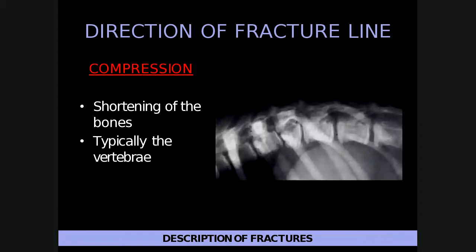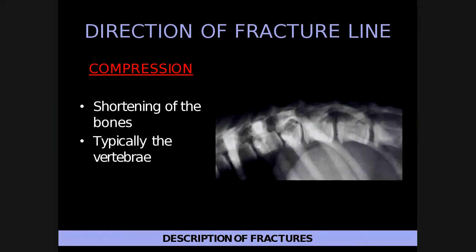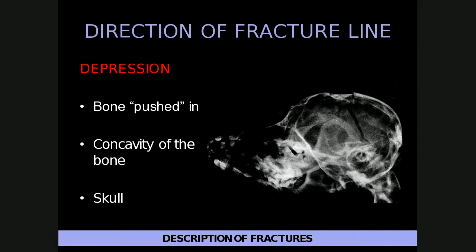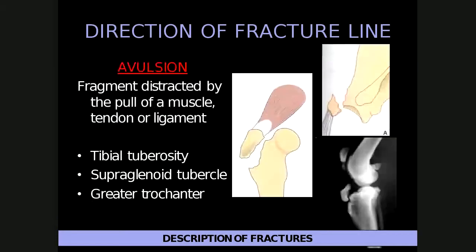A compression fracture typically occurs in immature animals and the vertebra, resulting in shortening of the bone — for example, T11 appearing much shorter and wedge-shaped compared to adjacent bones. A depression fracture typically occurs in the skull; for example, a fragment of the frontal bone depressed into the rest of the skull with a radiolucent fracture line extending from it. Avulsion fractures occur at attachment sites of tendons, ligaments, or joint capsules, caused by excessive forces resulting in a piece of bone being pulled off the parent bone.